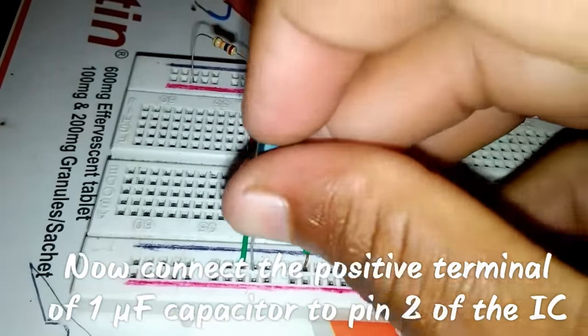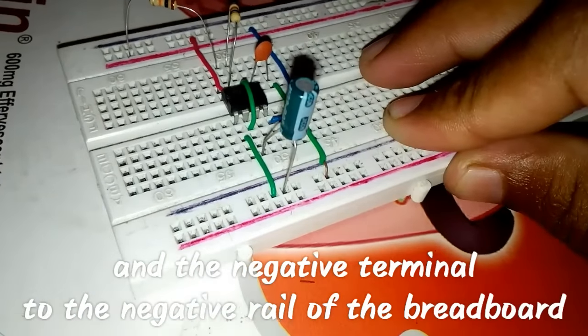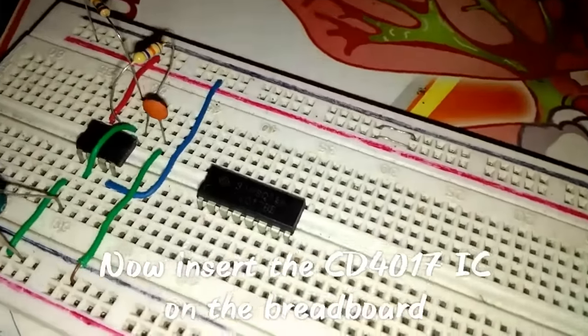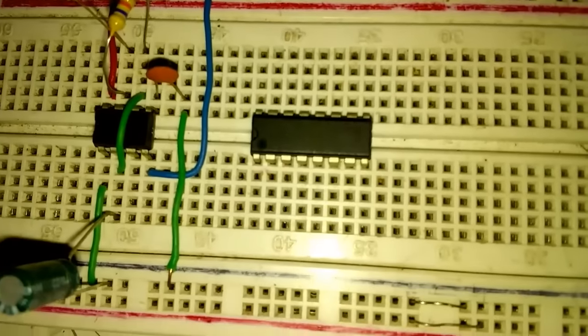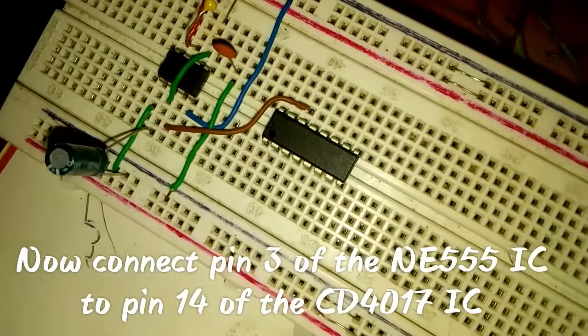Now insert the 4017 IC on the breadboard. Now connect pin 3 of the 555 IC to pin 14 of the 4017 IC.